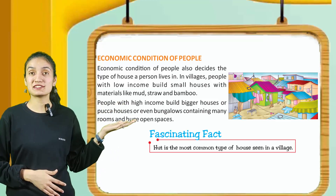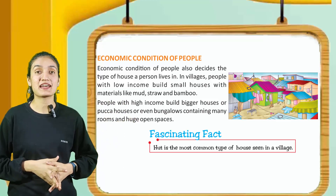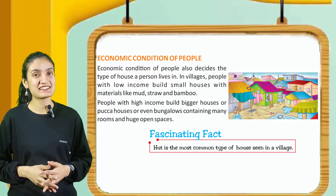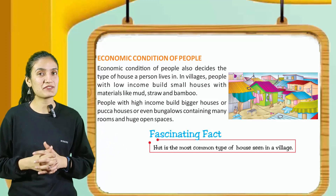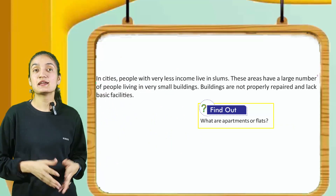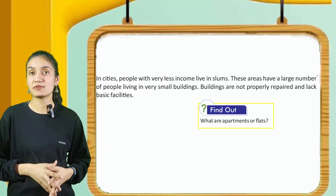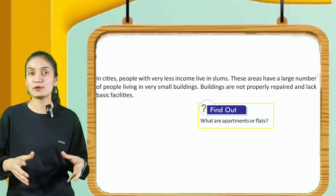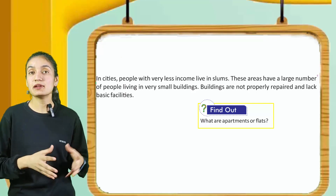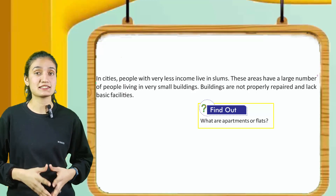Here you can see different types of houses. The fascinating fact: a hut is the most common type of house seen in a village. Students, have you ever visited a village and seen a hut? In cities, people with very less income live in slums. These areas have a large number of people living in very small buildings. Buildings are not properly repaired and lack basic facilities.